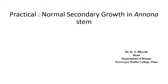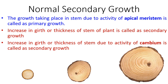Hi all students and viewers. In today's video we will be discussing normal secondary growth in Anona stem. Before studying normal secondary growth, we must know the meaning of primary growth. This growth is due to the activity of apical meristem. This growth may be taking place in stem or in roots, due to the activity of apical meristem — that may be root apical meristem or shoot apical meristem — and such growth is called primary growth.